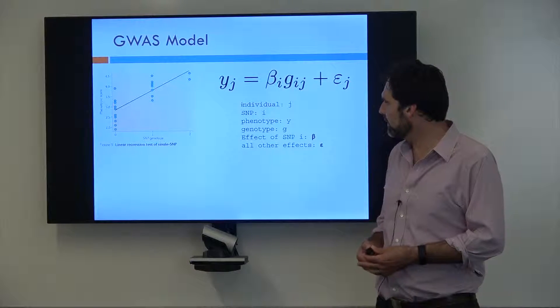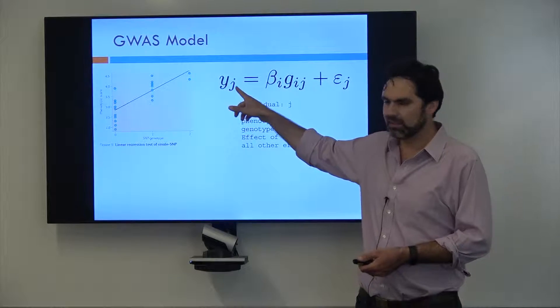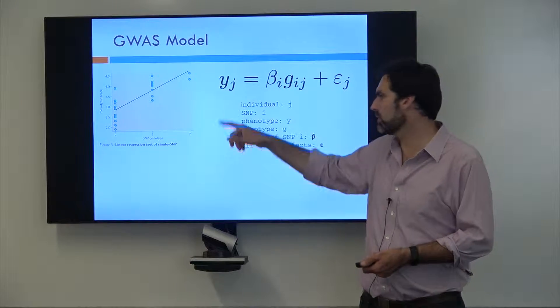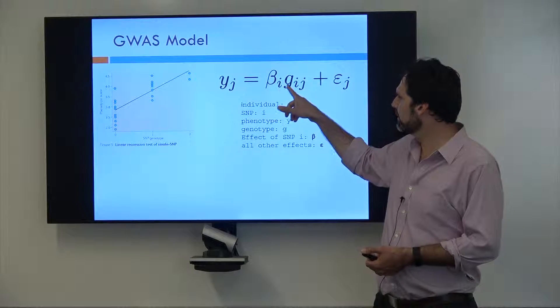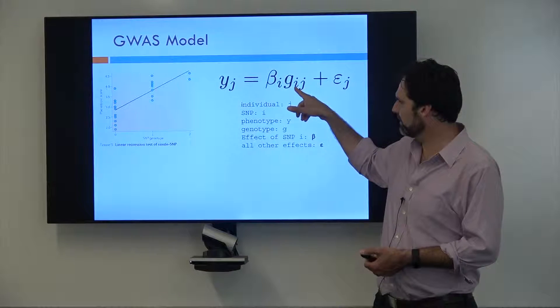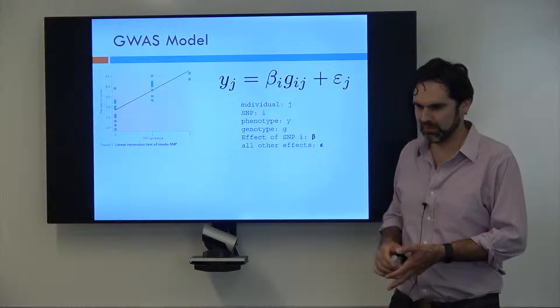If we look at this as an individual, the same equation but now rather than writing this in matrix form, we're saying here's the phenotype of the jth individual, this is the effect of the ith SNP, this is the genotype of the ith SNP in the jth individual, and then here's the environmental effect of that jth individual.